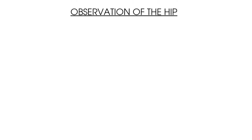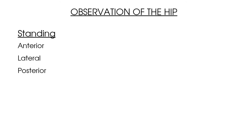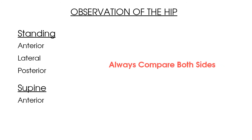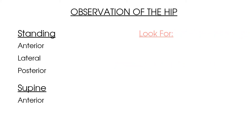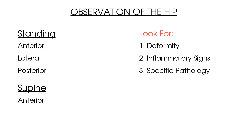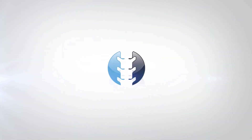Let's summarize this video on observation of the hip joint. In standing, break down your observation into an anterior, lateral and posterior view, before bringing your patient into a supine position and observing the joint in the anterior view. Remember to compare both affected and unaffected sides. When observing your patient, look for deformity and inflammatory signs — redness, swelling and bruising — and look for signs of specific pathology in each view as mentioned throughout the video. From here we'd suggest you check out other videos in the Clinical Physio catalogue, such as active and passive range of motion testing of the hip. Thanks so much for watching — we'll see you again soon on Clinical Physio.